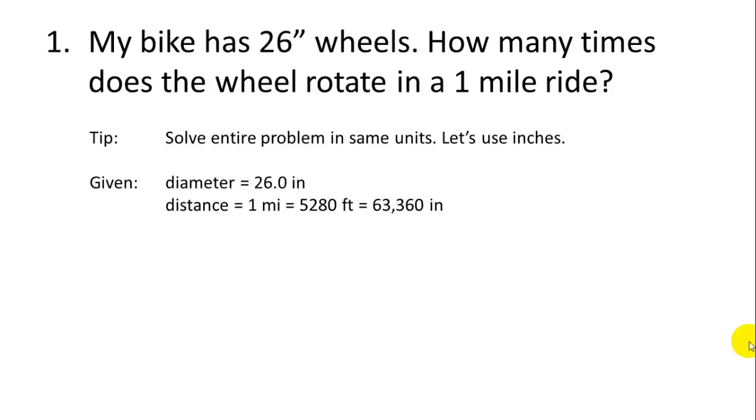We're given the diameter is 26.0 inches and the distance is one mile. So let's convert that one-mile distance to inches. We know that there are 5,280 feet in a mile. And if we multiply that by 12, number of inches per foot, we get 63,360 inches. So we travel a total of 63,360 inches. We have a 26-inch diameter.